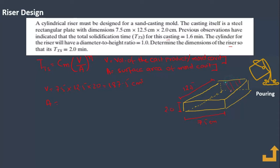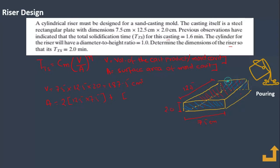The surface area includes the top face, the bottom face, the front face, the back face, and the two side faces. The top and bottom faces each have area 12.5 × 7.5 cm, giving 2 × (12.5 × 7.5). The front and back faces contribute 2 × (2 × 7.5), and the left and right side faces contribute 2 × (2 × 12.5).